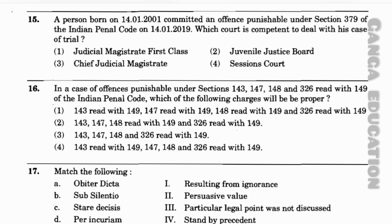Question number 16: In the case of offences punishable under Sections 143, 147, 148, and 326 read with 149 of the Indian Penal Code, which of the following charges will be proper? Option 1: 143, 147, 149, 148 r/w 149, and 326 r/w 149. Option 2: 143, 147, 148 r/w 149, and 326 r/w 149. Option 3: 143, 147, 148, and 326 r/w 149. Option 4: 143 r/w 149, 147, 148, and 326 r/w 149. The correct answer is option 3 — 143, 147, 148, and 326 r/w 149.